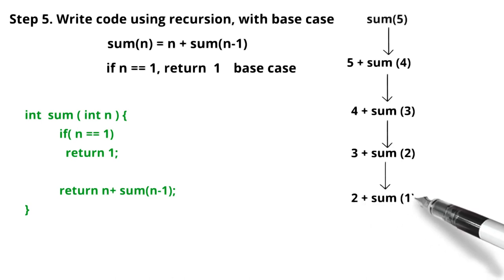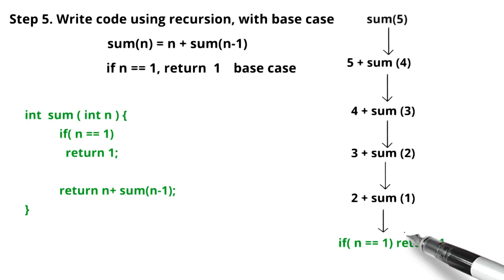Now we can see how the code will work. When we are putting 5 as a parameter, it will call 5 plus summation of 4. Summation of 4 will call the next function, that is 4 plus sum of 3 and 3 plus sum of 2 and so on.